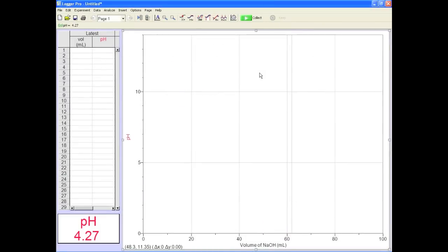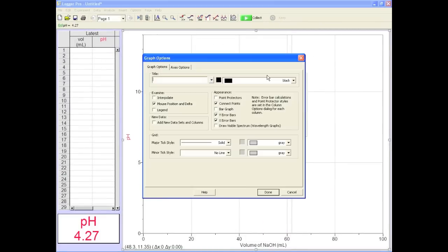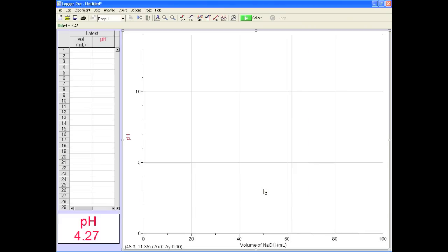Now do a preemptive mod on the graph by right clicking on the graph and selecting graph options. Check off connect points and check on point protectors. You're done here.